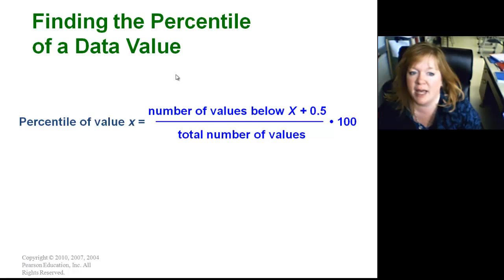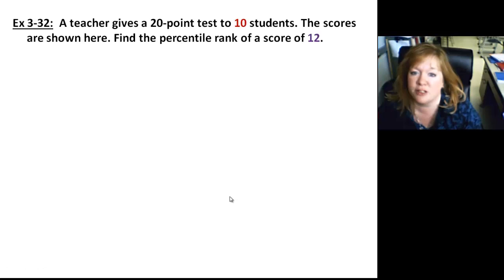Now, if you wanted to find a percentile of a data value, you're going to be using a formula. So all you have to be able to do is use this formula: number of values below X plus 0.5 over the total number of values times 100. Let's get into the example. Very easy to do, like most things in the statistics class. You just have to know the formula and how to use it.